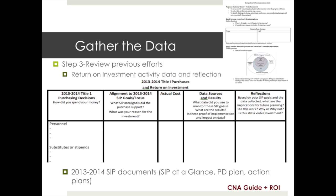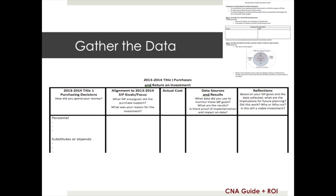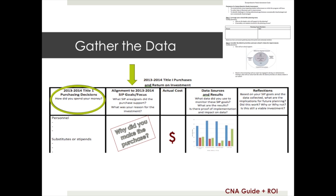Before planning forward, it is important to critically look at any past Title I purchases and the impact they have had in your school. Use the Return on Investment document as well as any other 2013-2014 SIP documents like action plans as part of this review. The Return on Investment process will guide you through an analysis of each Title I purchase, including the alignment to the 2013-2014 SIP and why the purchase was made, the cost of the investment, a review of data sources to determine if the purchase was implemented as intended, what impact was made on the data, a reflection on that impact — was it positive, questionable, or poor — and whether this could be a viable reinvestment. Once completed, your ROI now becomes an important data source for planning forward.